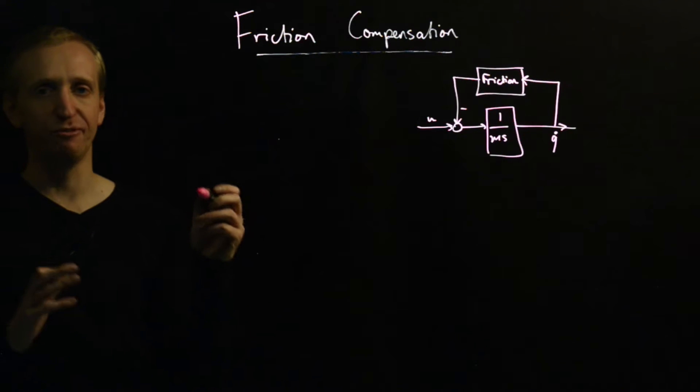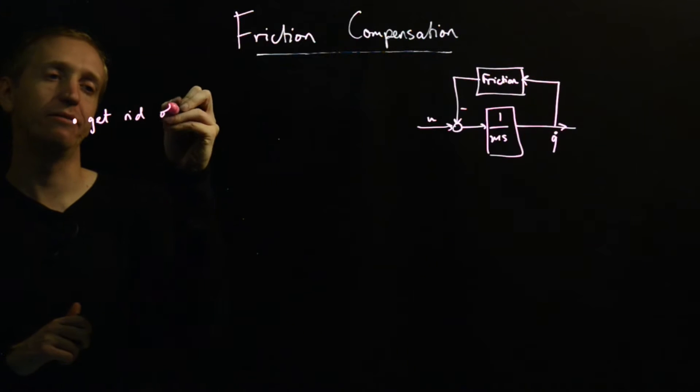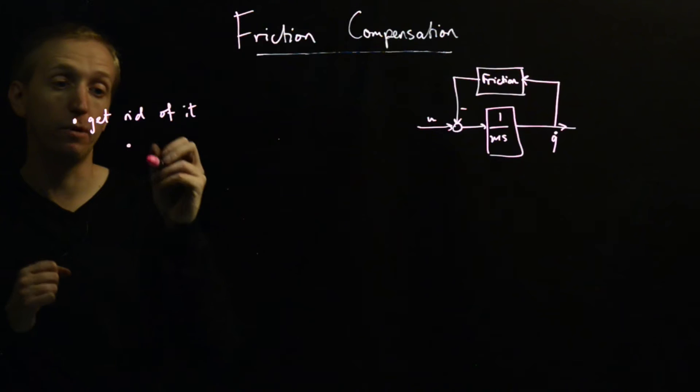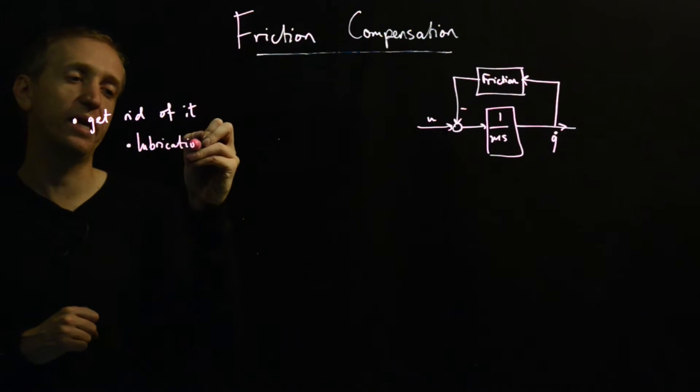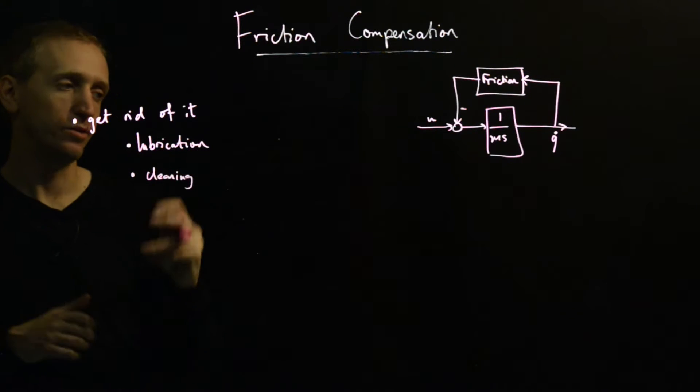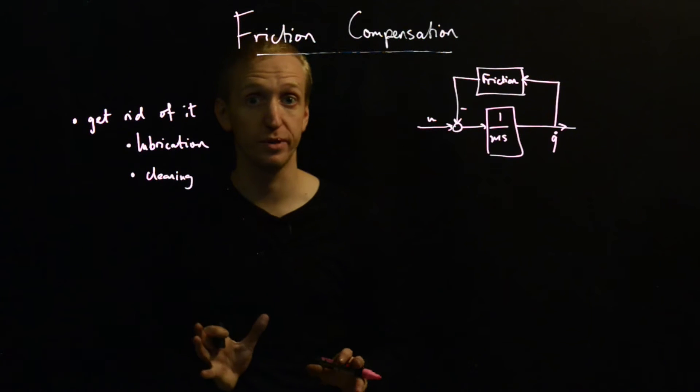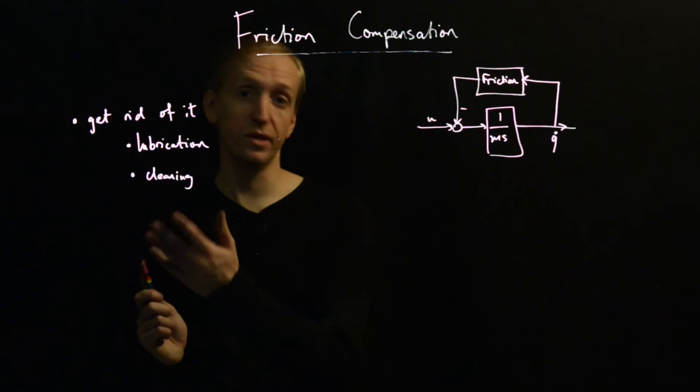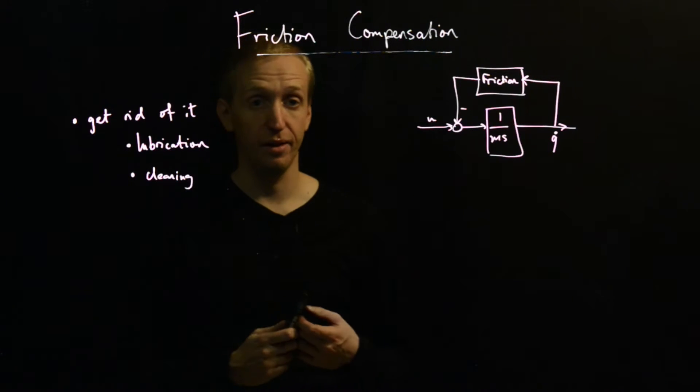The number one piece of advice for how to deal with friction is get rid of it as best you can. And by this, we mean things like keeping all of your components or joints well lubricated. Lubrication is key, cleaning wherever you have a source of friction, just try and lubricate and clean to the point where friction forces become as small as possible.